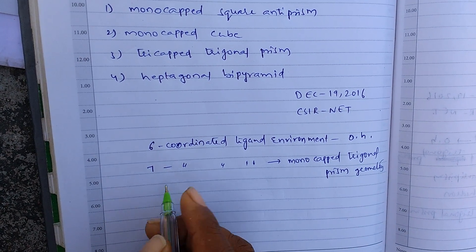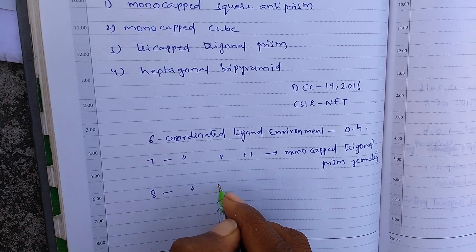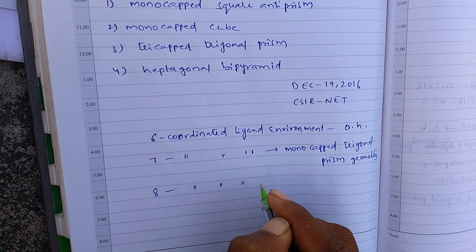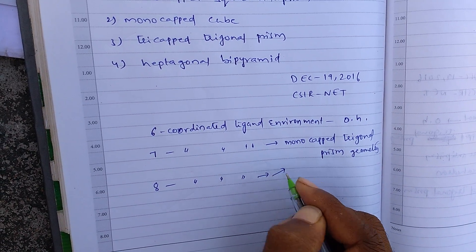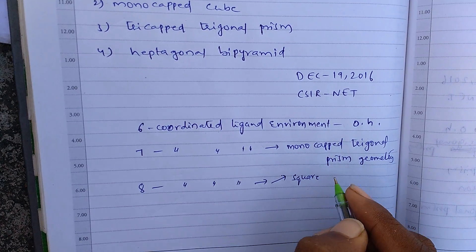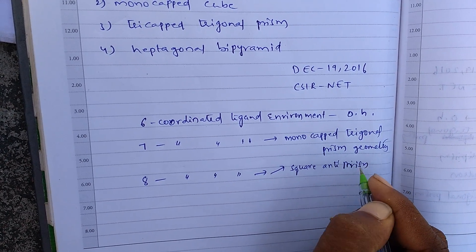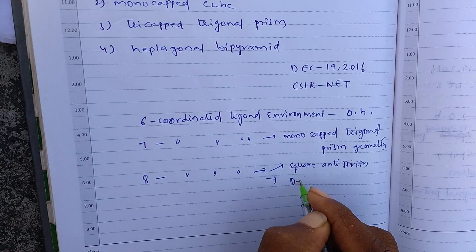And if metal is in 8 coordinated ligand environment, it has square antiprism and dodecahedron.